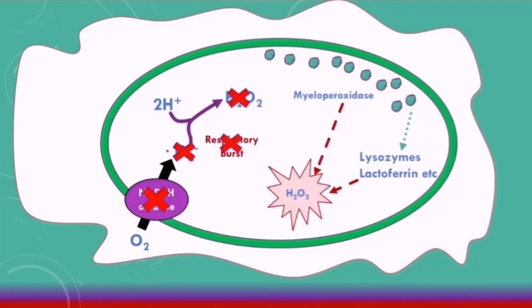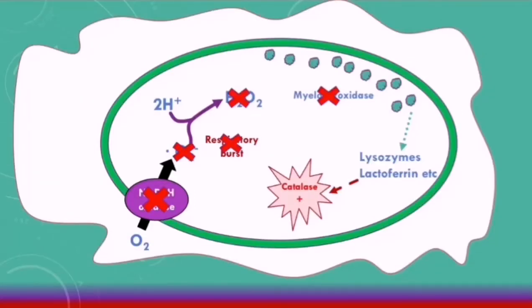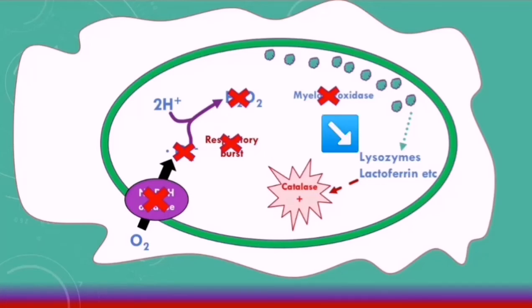Now consider a situation where the patient is infected with a catalase positive organism — this is much more problematic. When the phagocyte engulfs this pathogen, it will still produce hydrogen peroxide as a waste product, but because it has catalase enzymes, the catalase will break down this hydrogen peroxide. So the myeloperoxidase enzymes will not have much substrate to bind to and will not be able to kill the pathogen efficiently. This is why patients with CGD are at particular risk of infections from catalase positive organisms — the phagocytes cannot use the respiratory burst or myeloperoxidase, and are limited to oxygen-independent mechanisms such as lysozymes and lactoferrin from the lysosomes.